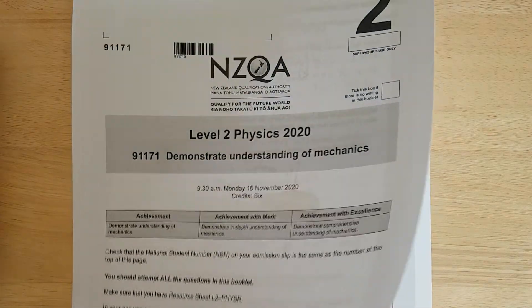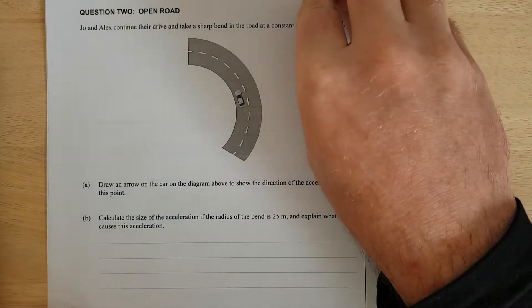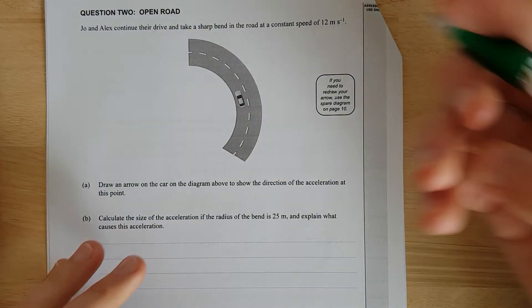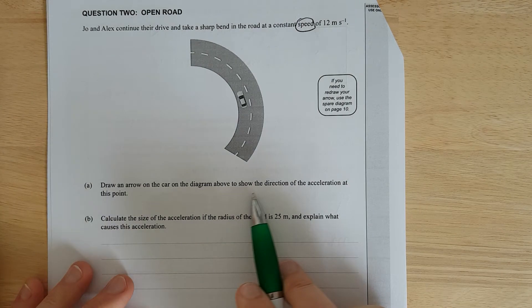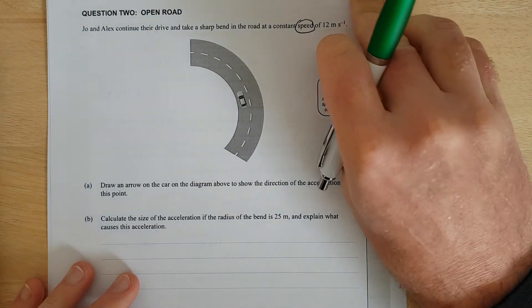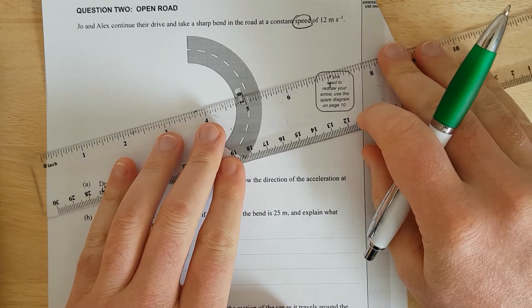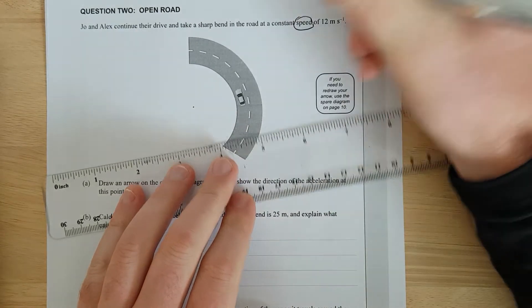This is question two of the 2020 Mechanics exam. John and Alex continue their drive and take a sharp bend in the road at a constant speed of 12 meters per second. Note the words speed and not velocity. Draw an arrow on the diagram above to show the direction of the acceleration at this point. So assuming it's going at a constant speed and it's going round a roundabout, just find the center of the circle is probably going to be about there-ish.